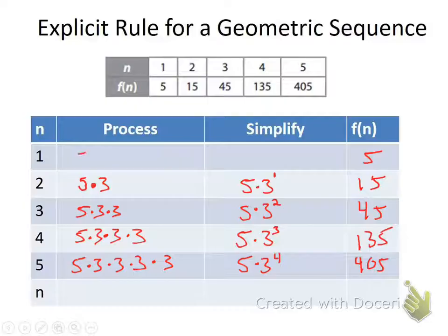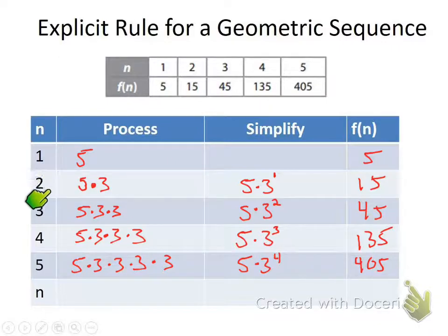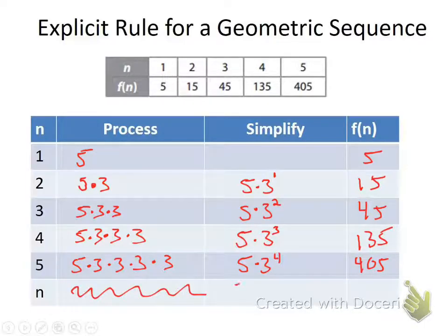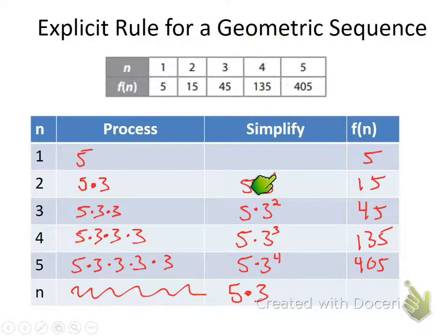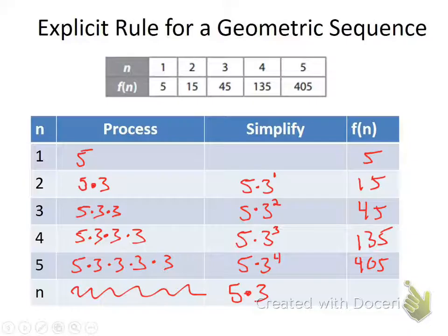Looking at the pattern: they all have the five in them, and we're multiplying by three a certain number of times. To find the second term we multiply by three one time; for the third term, two times; the fourth term, three times; the fifth term, four times. So to find the nth term, we don't multiply by three n times — we multiply by three n minus one times.